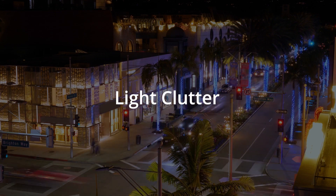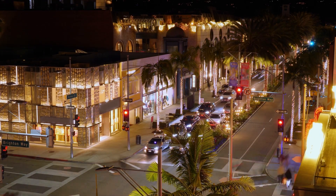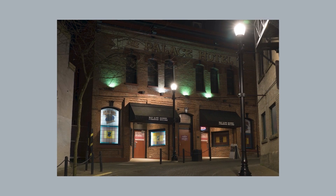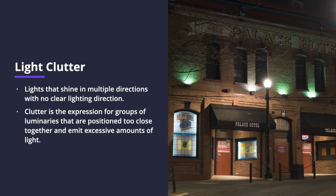The next form of light pollution is light clutter. Light clutter is lights that shine in multiple directions with no clear lighting direction, and it can be found in any modern city. You can see in this photo light coming out of the top of the luminaire — the street light. The light is actually meant to go on the ground; lighting should be pointing downwards. The light in this photo is going up into the night sky and not lighting what it's intended to. Light clutter also refers to groups of streetlights positioned too close together that emit an unnecessarily excessive amount of light.